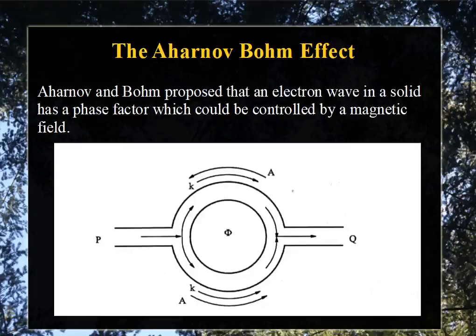This is the experimental setup for the observation of the AB effect. It consists of a metallic ring with a diameter of around 800 nanometers. It is made up of a metallic wire and the thickness is around 50 nanometers, so it is a nanostructure.